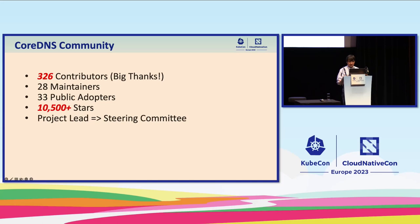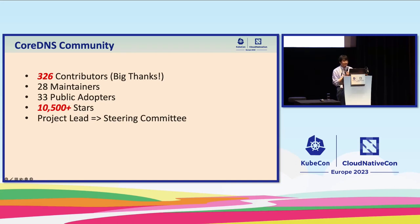I'm pretty sure more than 33 institutions are using CoreDNS; many companies just didn't share their name publicly. If your company is using CoreDNS and is comfortable sharing, you can create a pull request to add yourselves as a public adopter — that also makes you part of the CoreDNS contributor community. As of right now, CoreDNS has reached 10,000 stars, which is a major milestone. If you haven't done so, I encourage everyone to star CoreDNS on GitHub. Let's see when we can reach the next milestone.